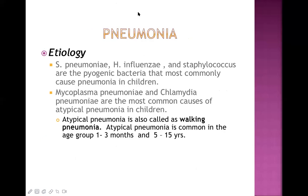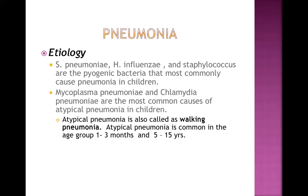The etiology of pneumonia differs according to age group. Streptococcus pneumoniae, Haemophilus influenzae type B, and Staphylococcus aureus are the pyogenic bacteria most commonly causing pneumonia in children across all age groups except neonates. Mycoplasma pneumoniae and Chlamydia pneumoniae are the most common causes of atypical pneumonia, whereas the earlier organisms cause community-acquired typical pneumonia.